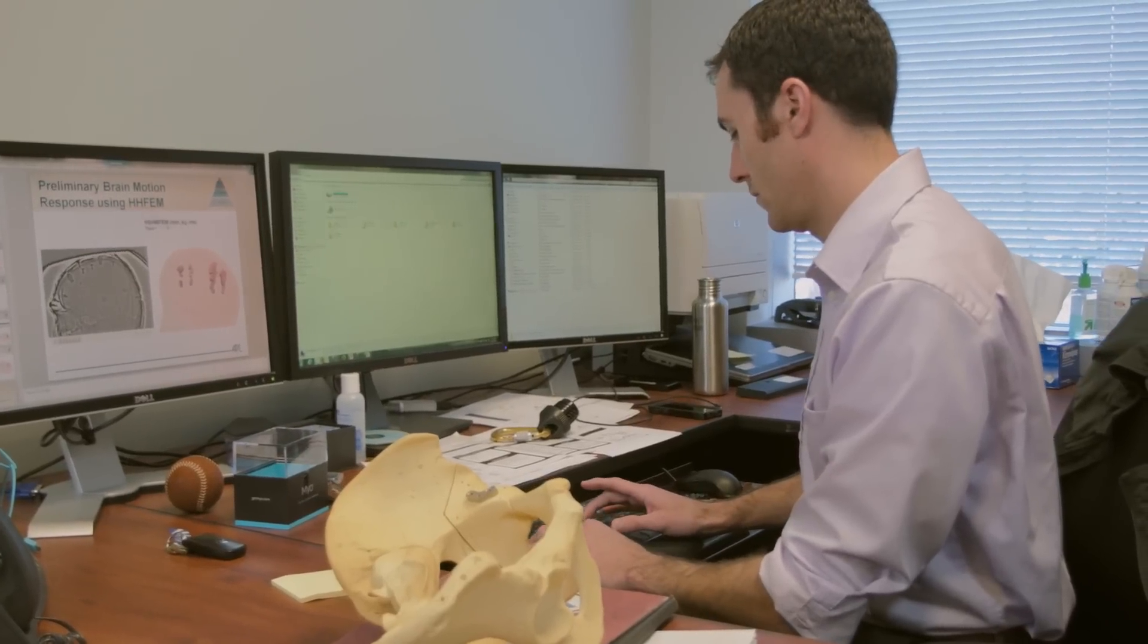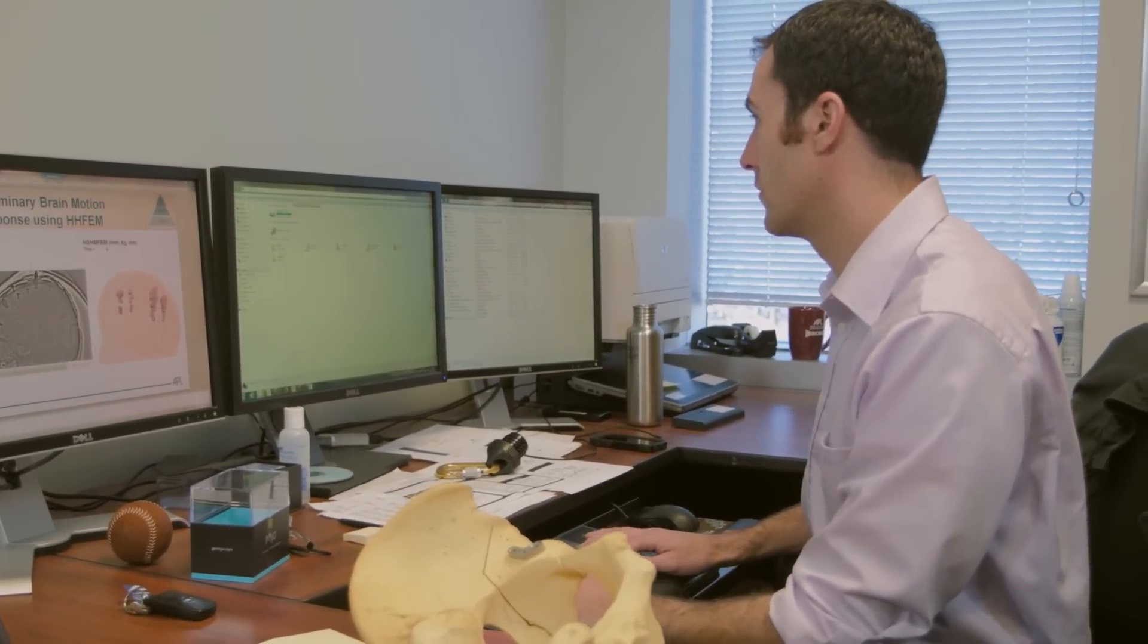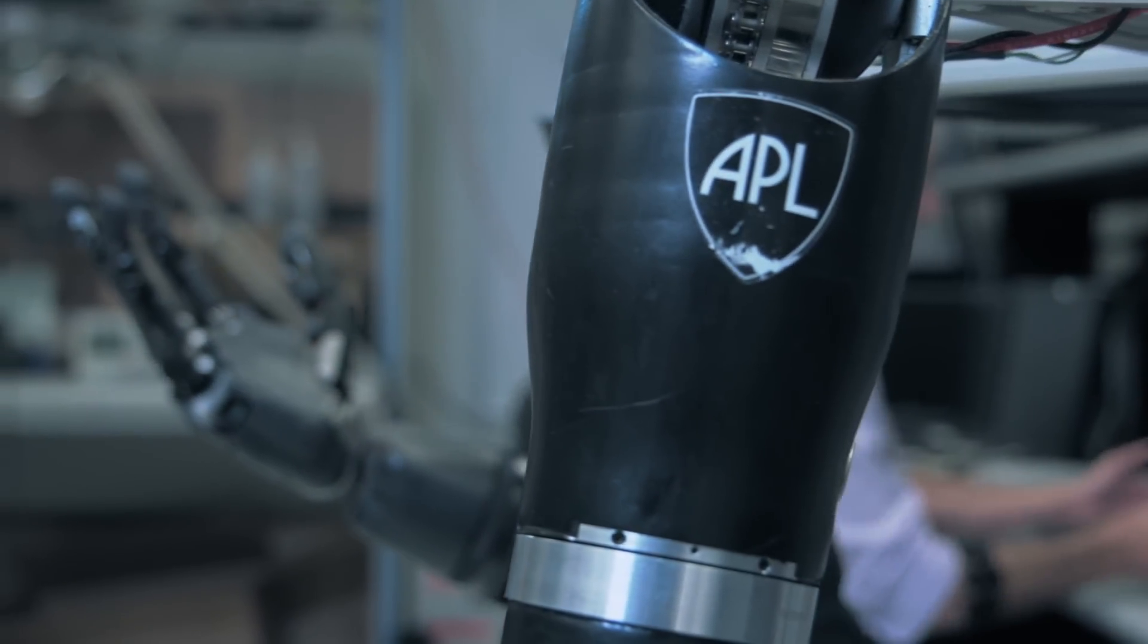Robert Armiger is a biomechanical engineer and group supervisor for the Biological Sciences and Engineering Group in the Research and Exploratory Development Department of Johns Hopkins University Applied Physics Lab.